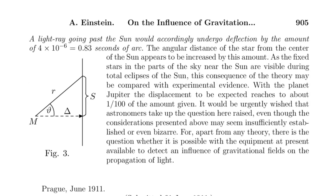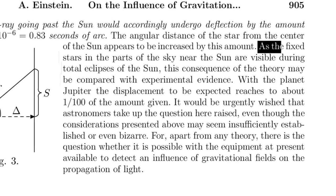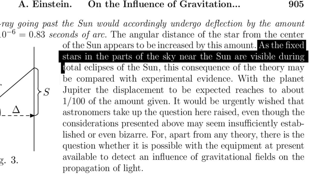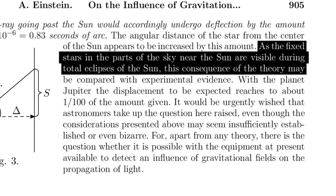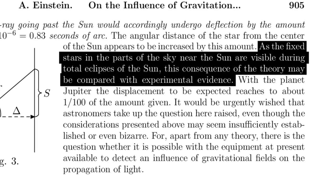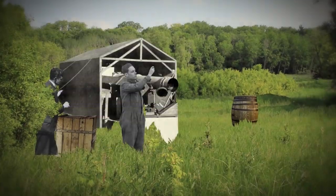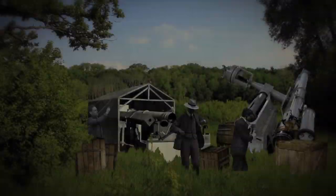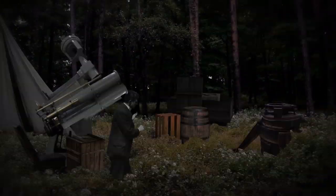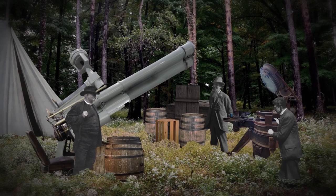In regards to testing his calculations, Einstein wrote: "As the fixed stars in the parts of the sky near the sun are visible during total eclipses of the sun, this consequence of the theory may be compared with experimental evidence. It would be urgently wished that astronomers take up the question here raised, for apart from any theory, there is the question whether it is possible, with the equipment at present available, to detect an influence of gravitational fields on the propagation of light."